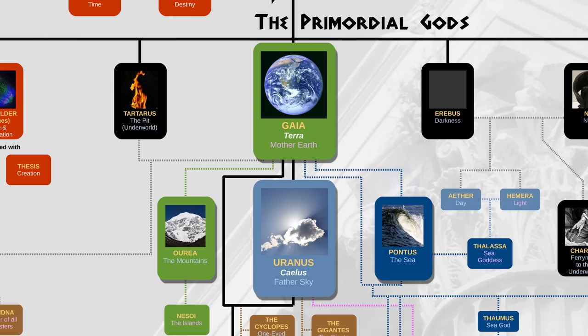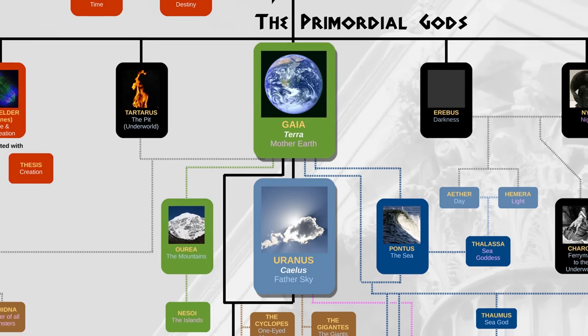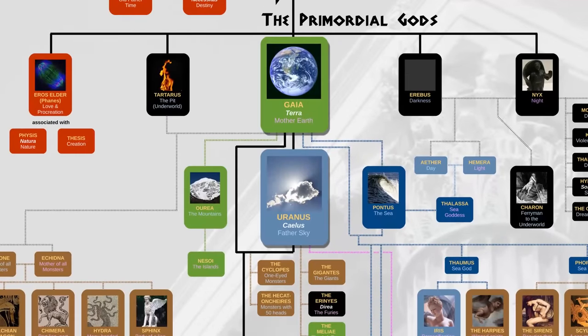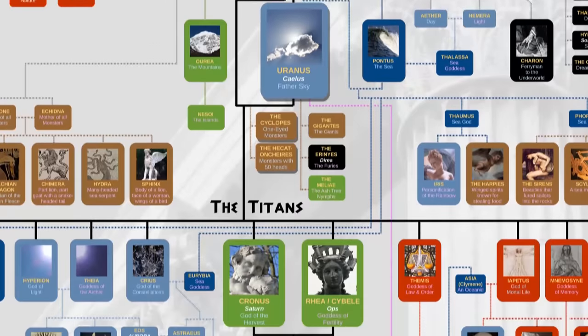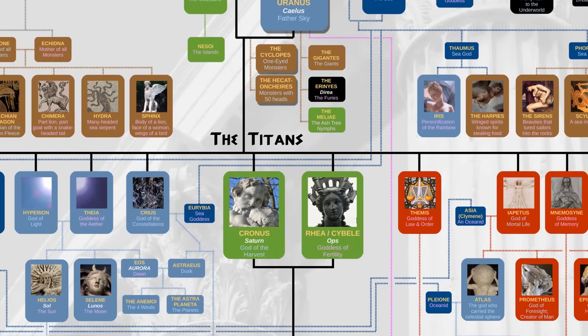Take note of the colours because I use them throughout the chart. Green represents Earth gods, light blue represents sky gods, and dark blue represents sea gods. Now, Gaia and Uranus actually became a couple and from them came the Cyclops, monsters with one big eye, the Hecatonchires, monsters with 50 heads and 100 arms, and most importantly, the 12 Titans.